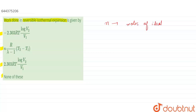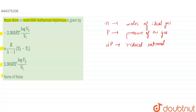Consider n moles of ideal gas enclosed in a cylinder fitted with a weightless and frictionless movable piston. Let the pressure of the gas be P, which equals the external atmospheric pressure. Let the external pressure be reduced by an infinitely small amount dp, and the corresponding increase in volume will be dV.